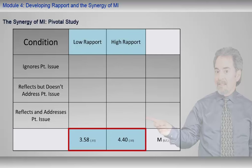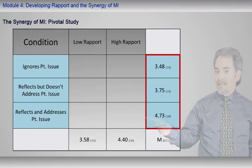As you can see in the table, the results were significant for the simple impact of high rapport vs. low rapport. High rapport produced significantly greater perceived likelihood of change than low rapport. Similarly, the results were significant for the impact of addressing the patient's sense-making. Reflecting and addressing the patient's issue produced significantly greater perceived likelihood of change than the other two conditions. Ignoring the patient's issue produced significantly less perceived likelihood of change than the other two conditions.